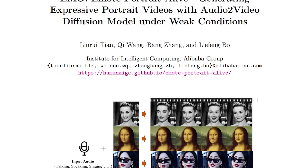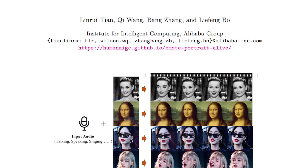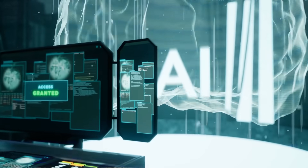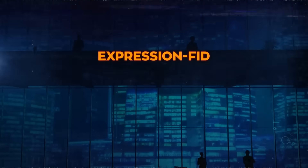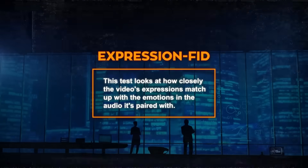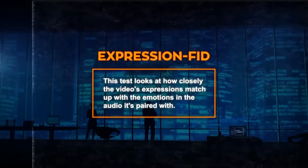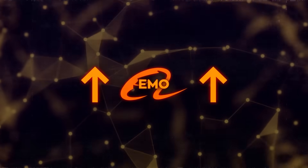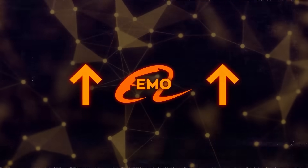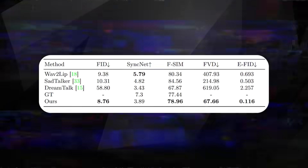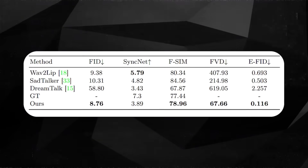The team didn't just make these claims without backing them up. They put Emo through its paces with tests and studies to see how it measures up, using a bunch of different ways to check its performance, including something called Expression FID. This test looks at how closely the video's expressions match up with the emotions in the audio it's paired with. Emo came out on top with the lowest Expression FID score, meaning it was the most on point with its expressions. They also got people to watch the videos and give their thoughts on how natural they seemed, how well they conveyed emotion, and how accurately they kept the identity of the characters — and again, Emo won out, earning the highest marks.